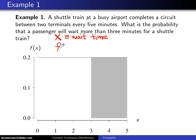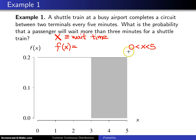Once you make that assumption, f of x will have support. The wait time can go anywhere from zero to five. This will be the uniform distribution with a equals zero and b equals five, so f of x will be one over b minus a. One over five minus zero is just one-fifth.